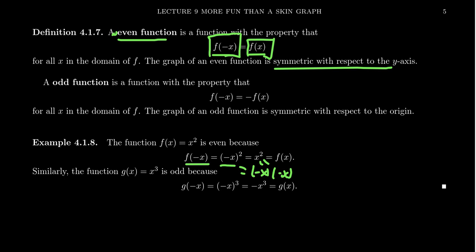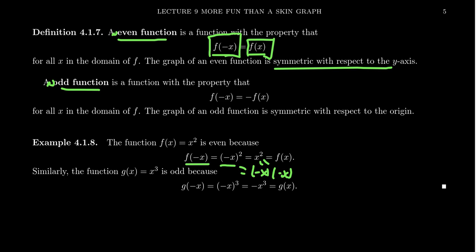An odd function is a function with the property that f of negative x is equal to negative f of x. There are two ways of thinking about it: a reflection across the y-axis is the same thing as a reflection across the x-axis. Another way of thinking about it is that a function is odd if it's symmetric with respect to the origin. Being symmetric with respect to the origin means that if you take a point and go through the origin, you'll find that point on the other side — or you could take a half spin, rotating the graph around the origin by 180°, and get the exact same picture.